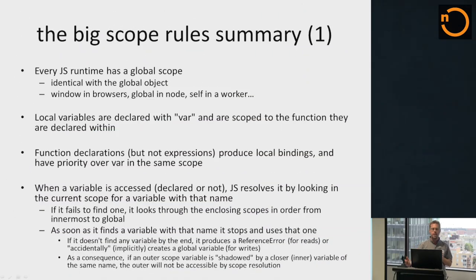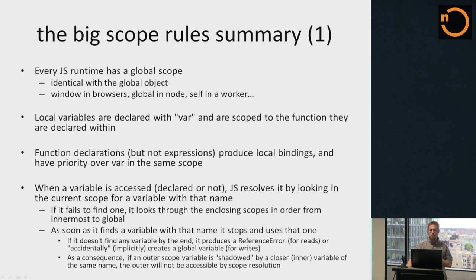Here's the obligatory rundown of the rules — these are not all of the rules; the spec contains more. First: every JavaScript runtime has a global scope. This is identical with the global object. Unfortunately there was never a requirement that it has a certain particular name — in the browser we call it window, in Node we call it global, in a worker we call it self. There's no rule that in your own JavaScript runtime you couldn't call it something else.